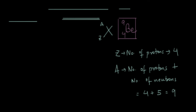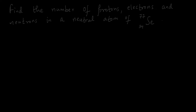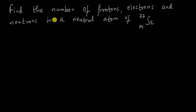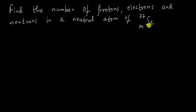Let's try another problem which is just the reverse of this one. We have to find the number of protons, electrons, and neutrons in a neutral atom of selenium-77 (⁷⁷₃₄Se). So this time we are given the element symbol and we have to find the number of protons, electrons, and neutrons in a neutral atom of this element.